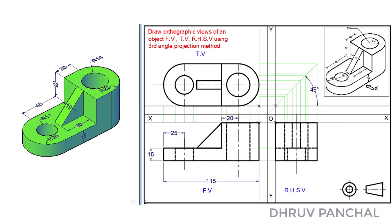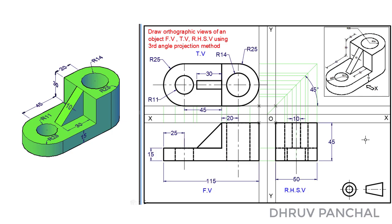Now, mention the dimensions in each view as per the dimensioning rule. I hope you understood it. If you have any questions, let me know in the comment box. Thank you.